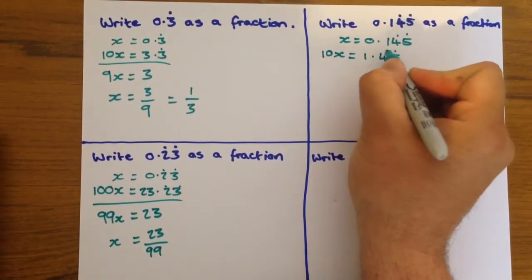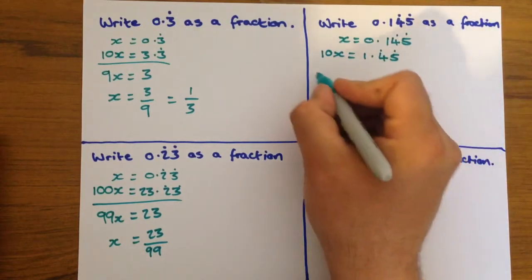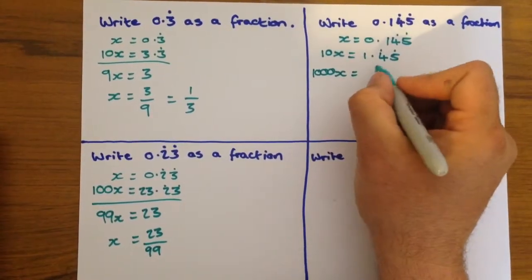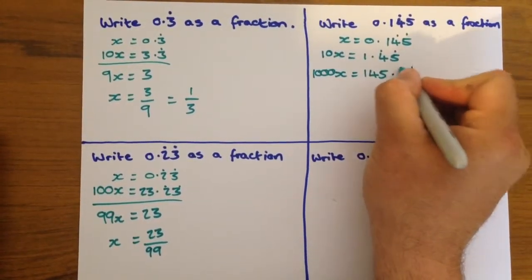That gives you 1.45 recurring, and to get the other one, we need to move the decimal point three places, so 1000x equals 145.45 recurring.